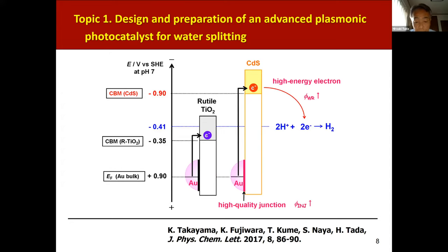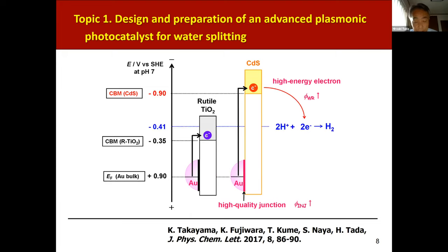As a first topic, I'd like to talk about the design and preparation of an advanced plasmonic photocatalyst for water splitting. This figure compares the energy diagram of Au/TiO2 and Au/CdS. The conduction band minimum energy of CdS is significantly higher than that of TiO2. Recently, we have shown in the Au/CdS system that LSPR excitation causes hot electron transfer from the gold nanoparticle to CdS. If we can couple gold nanoparticles and CdS with a high-quality interface, it should be a promising plasmonic photocatalyst for water splitting.